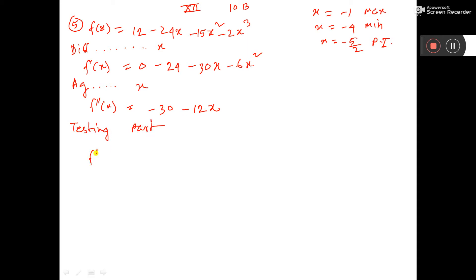Directly you take f''(x) at the point x equal to -1. So, here you put -30 - 12(-1), that is equal to -30 + 12, that is -18, less than 0. Therefore it has what value? Maximum value, max value. So, it is proved.